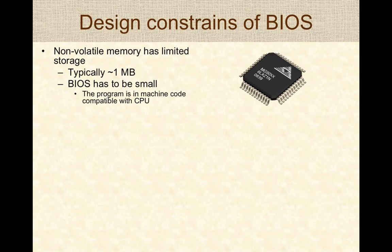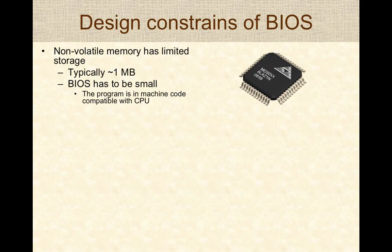It is important to understand why computers are architected this way. The reason boils down to non-volatile memory: the ROM used on computers has limited storage, typically about a megabyte in size. So the BIOS program has to be small, written in machine code, and compatible with the specific CPU being used. For example, if it's an Intel CPU, the BIOS must be compatible with x86 instructions; if it is an ARM CPU, the BIOS needs ARM instructions.